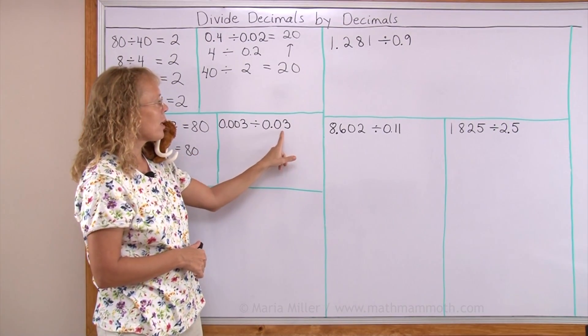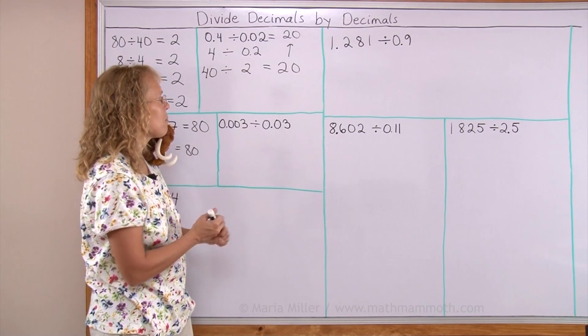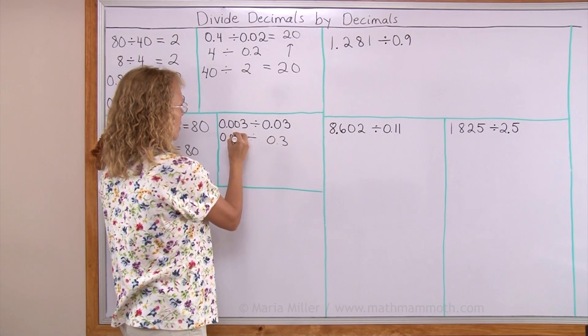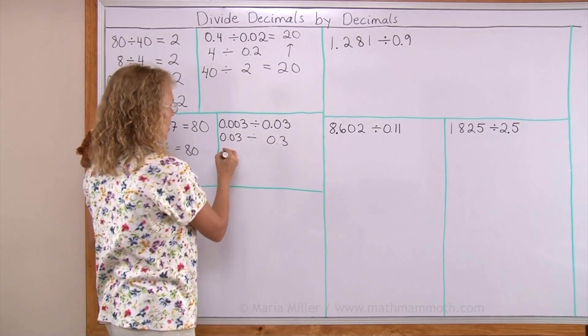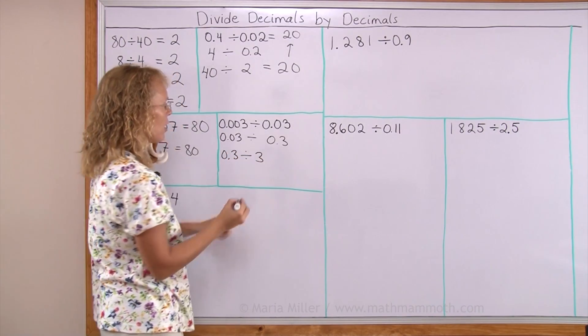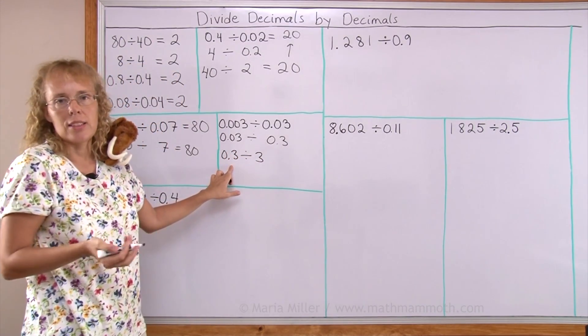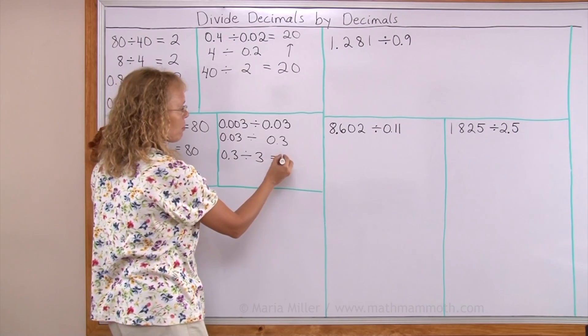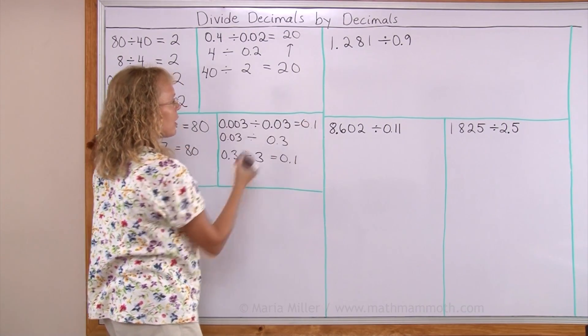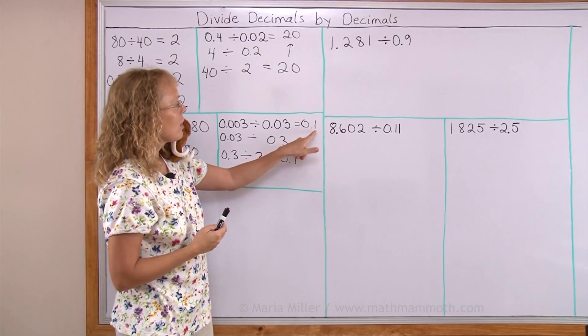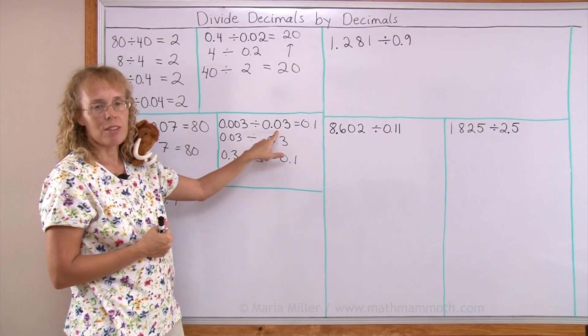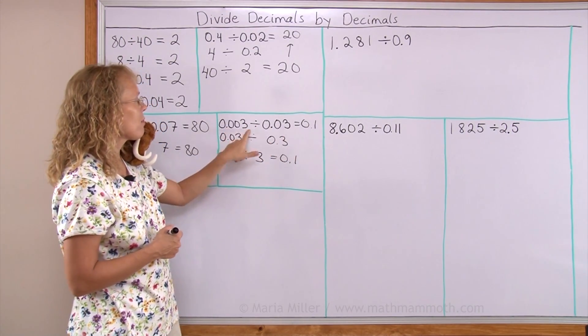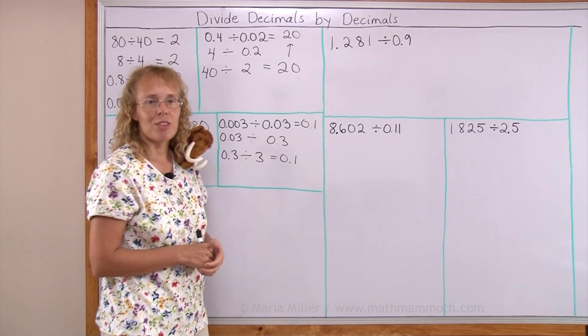I'll again multiply both by, not 10, I mean I could at first multiply them by 10. But that's not enough because this is not yet a whole number. So I'll do it again. And now I have a whole number divisor. This number can still stay as a decimal. And this is like 0.3 shared between 3 people. Each person will get 0.1. So the original also, the answer is 0.1. And you can check by multiplying. 0.1 times 0.03. Well, you go 1 times 3 equals 3. One decimal digit, two decimal digits, and the answer will have 3. That's the shortcut for decimal multiplication, if you remember.